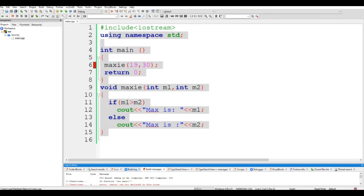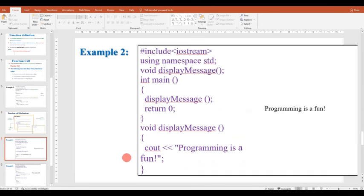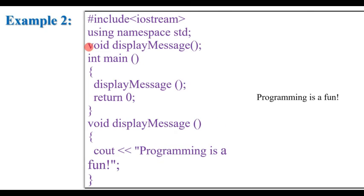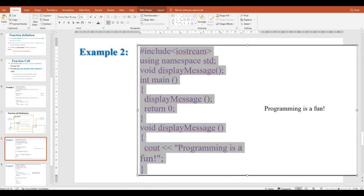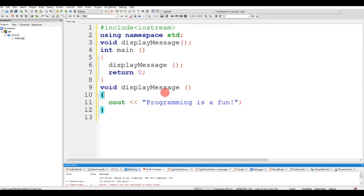For the function prototype, for instance, we can use a display message function without any parameters — the function prototype is created with void return type. The display message function is created and the program displays output directly. The result is created by the function prototype, which serves as the function declaration.